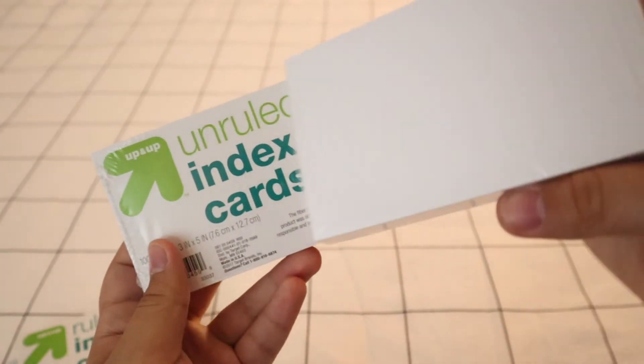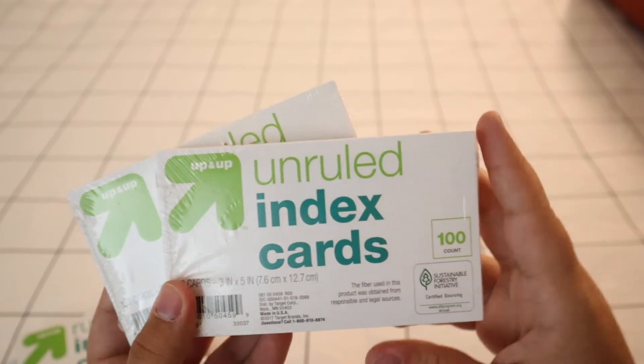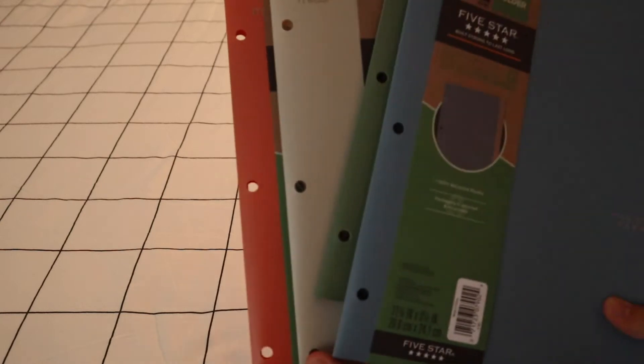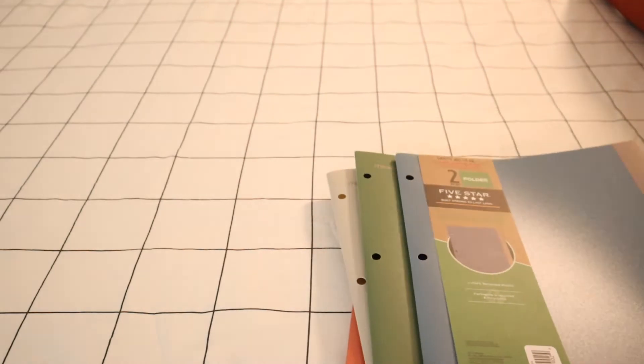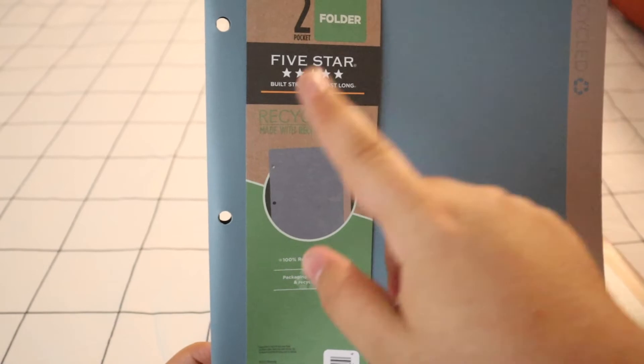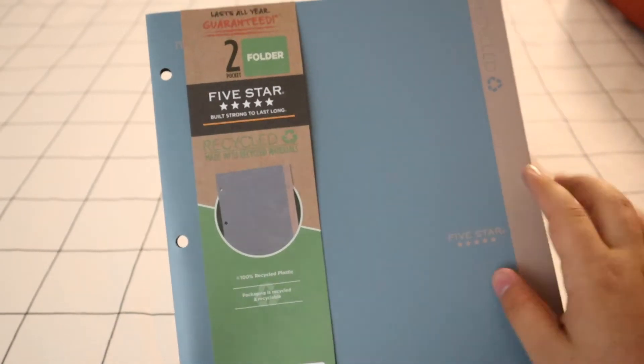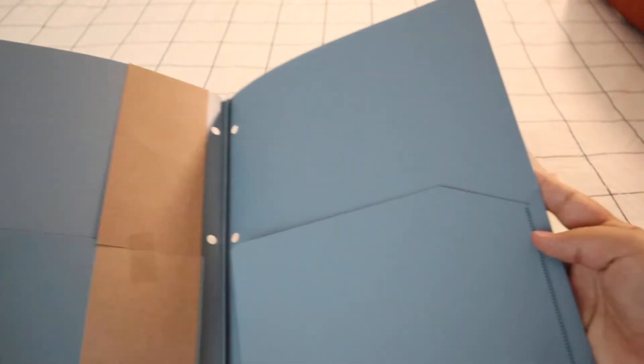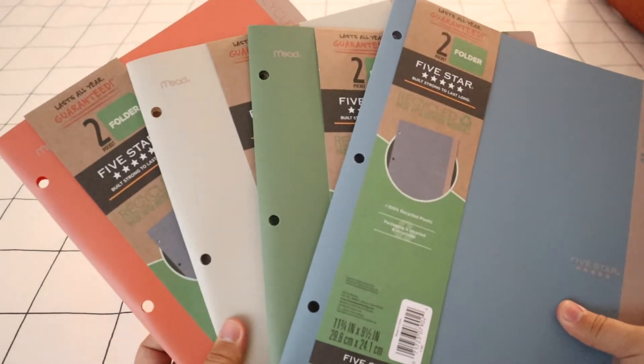Next up, to hold all my papers and homeworks and stuff like that, I decided to get a four pack of these Five Star recycled folders. When I saw this, it was like okay, they're starting to become eco-friendly, which made me so happy because I do care about whether packaging is eco-friendly and whether the product itself is eco-friendly. And these are made of 100% recycled plastic, so very happy about that.